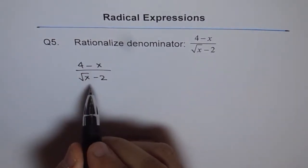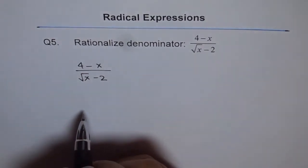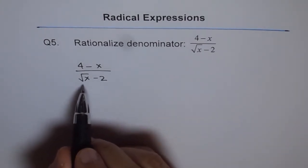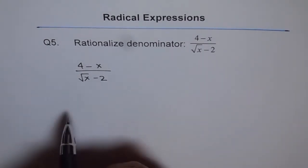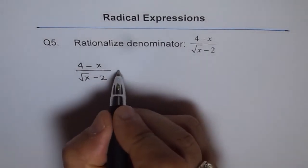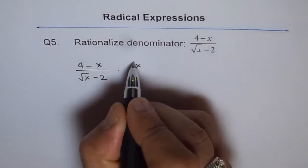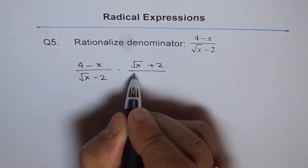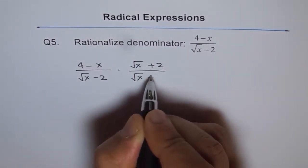Now to rationalize this expression, we need to multiply by the conjugate of square root x minus 2. The conjugate is with a positive sign here. So we will multiply and divide by square root x plus 2 divided by square root x plus 2.